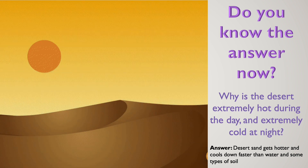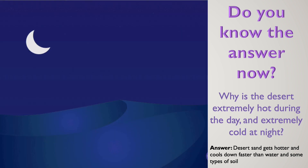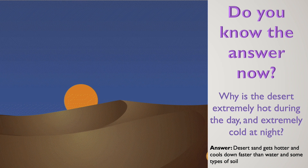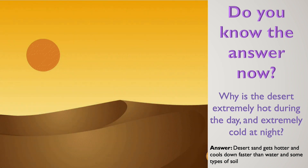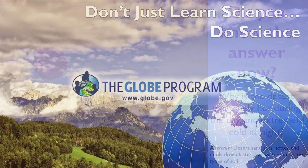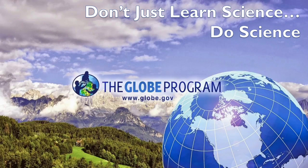Remember our brain teaser? Do you now know the answer to why the desert is extremely hot during the day and extremely cold at night? The answer is that desert sand heats up and cools down faster than water and some types of soil. Thank you for watching another training video of the GLOBE program. This is Rod Alan Delara and Joanne Calo Pe from the Philippines signing off — remember, don't just learn science, do science.